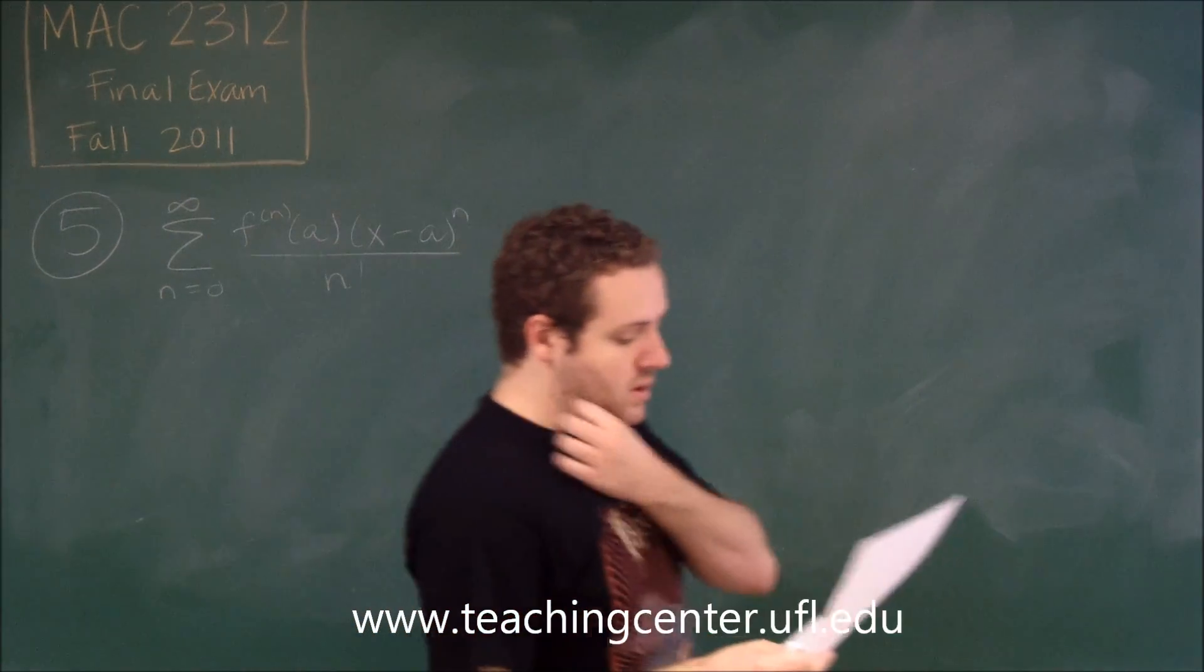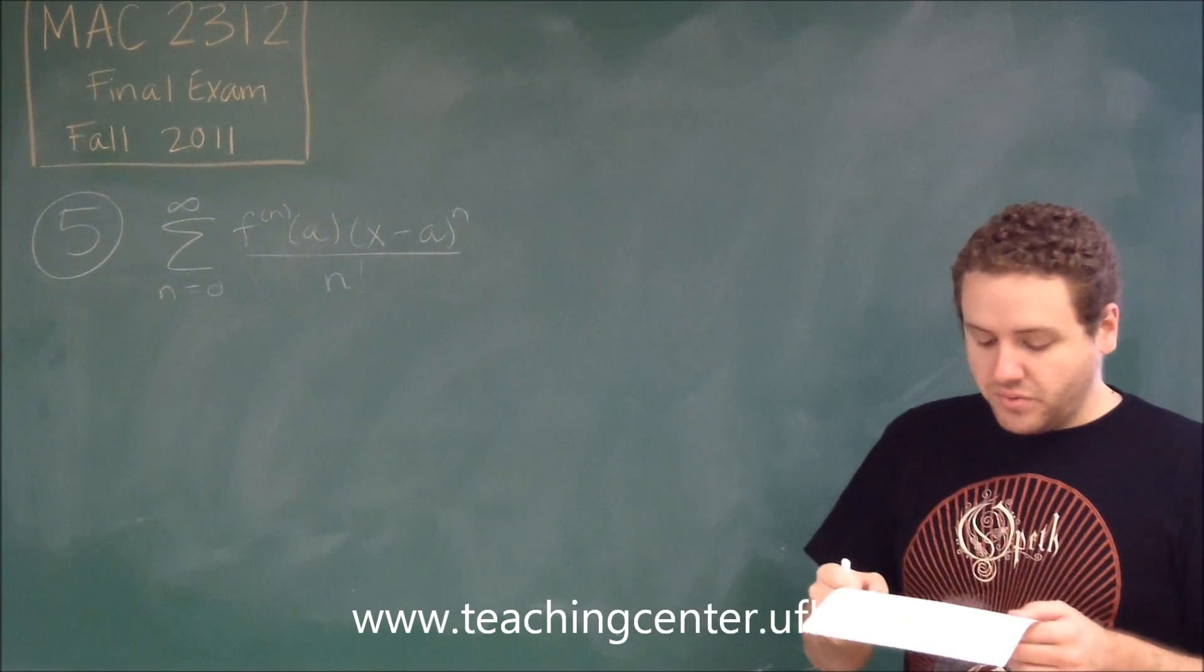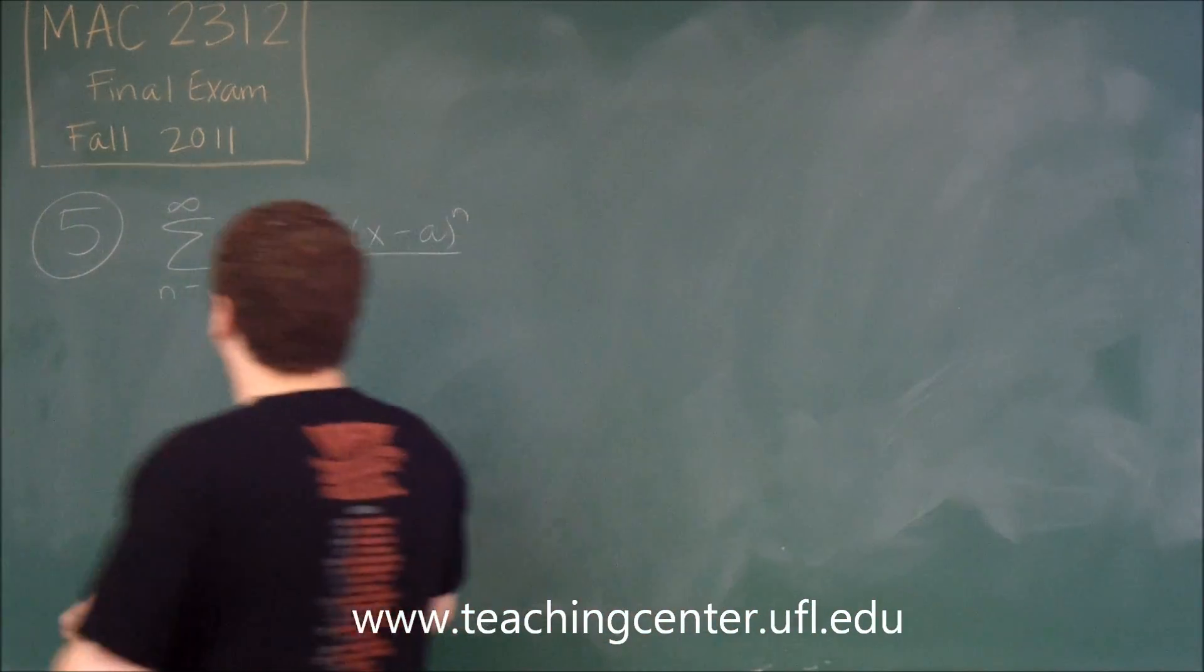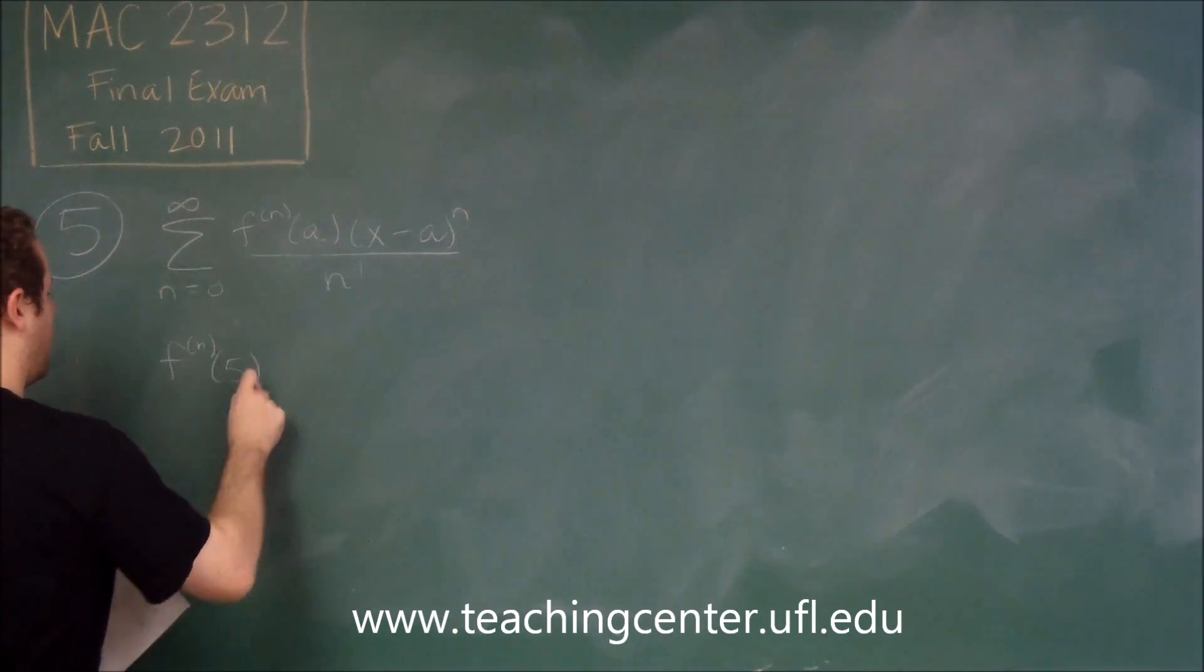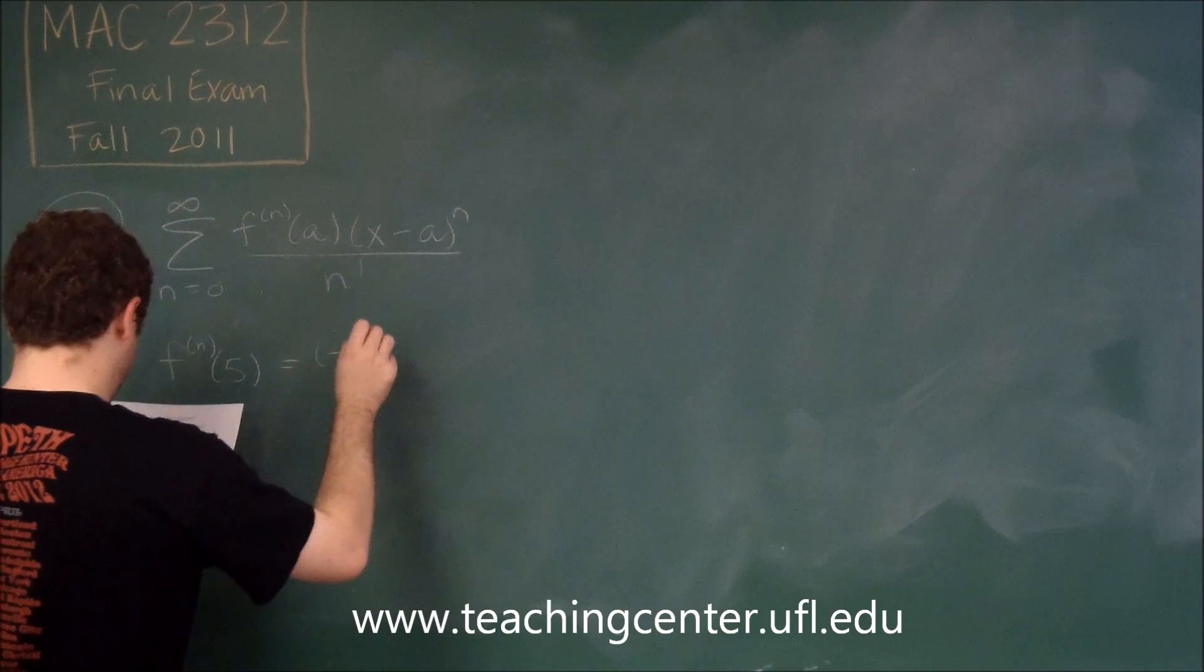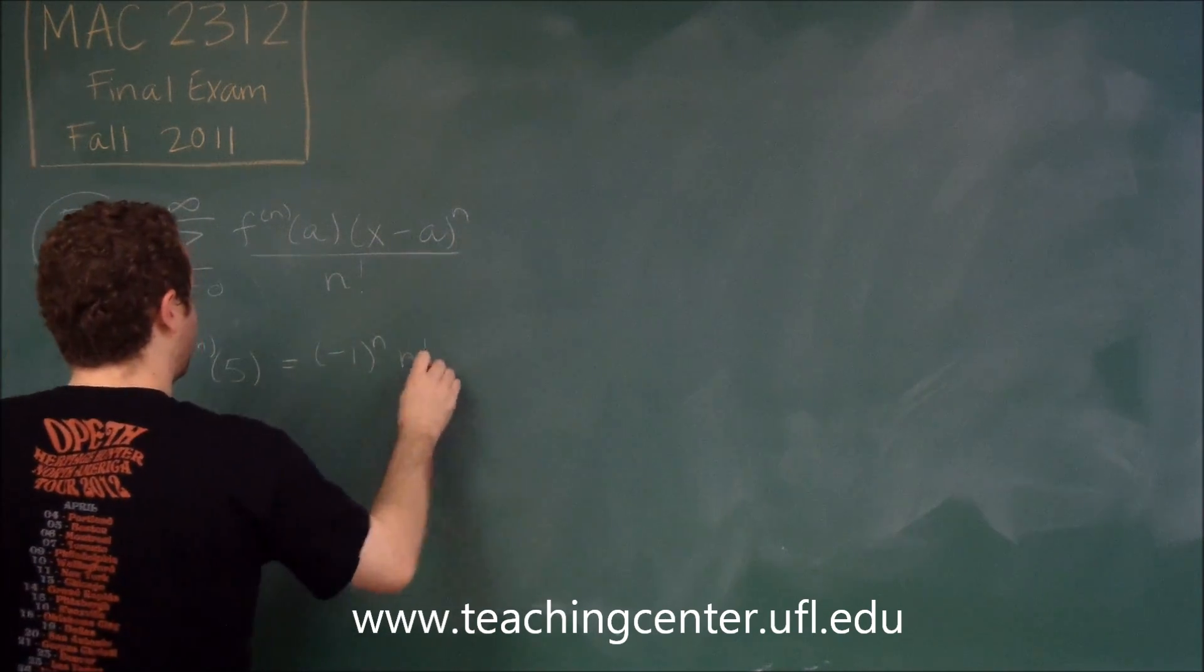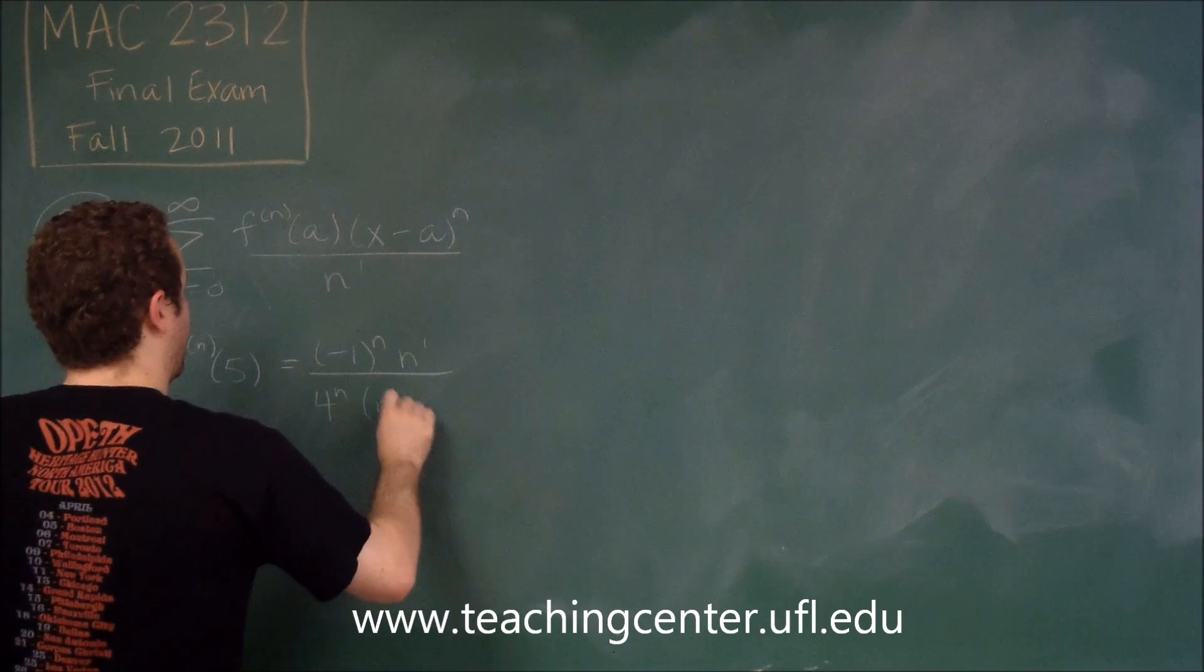We know that we're centering it at 5, so our a is 5. And we're told that the nth derivative at 5 has its own formula here: negative 1 to the n, n factorial over 4 to the n, times n plus 1.